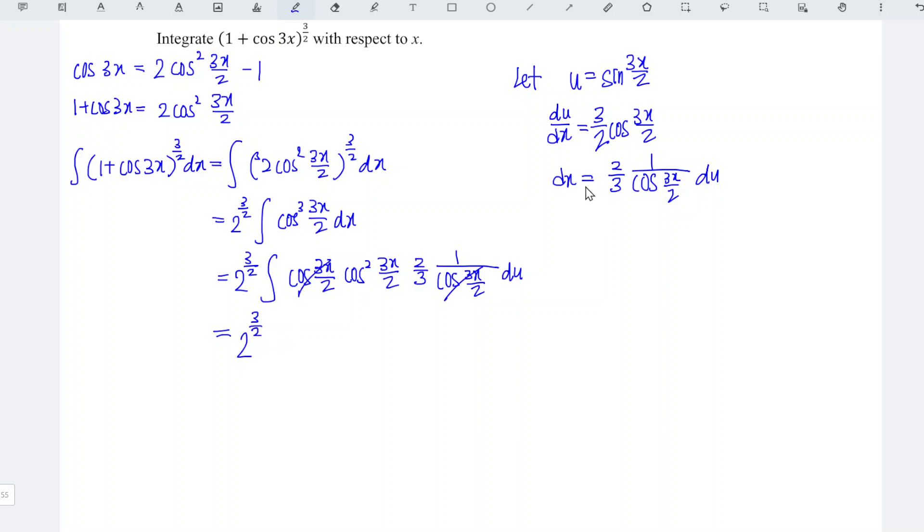If we want to make use of u, as we can see we have cos squared. Apply the Pythagorean identity, so we have cos squared 3x over 2 plus sine squared 3x over 2 is equal to 1.